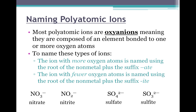You do not have to memorize the names of the polyatomic ions, but you do have to know a little bit about how they're named. You can find the names right on the polyatomic ion chart. Most polyatomic ions are what we call oxy anions — oxy for oxygen, anion meaning it's negative. To name these compounds, they generally have two endings: an ATE ending or an ITE ending.